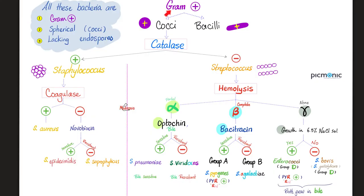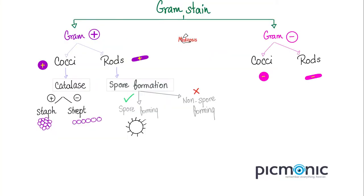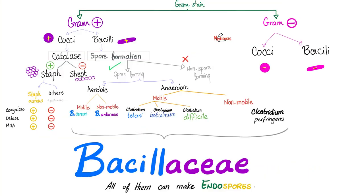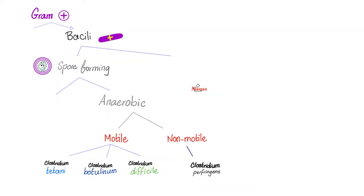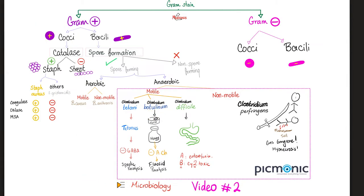Clostridium botulinum is a gram-positive rod, spore-forming, strictly anaerobic yet motile. Clostridium botulinum produces a toxin. How can you get exposed to that toxin? By eating home-canned food, or improperly canned cured fish, or spores in honey, or spores in soil, or spores in dust.